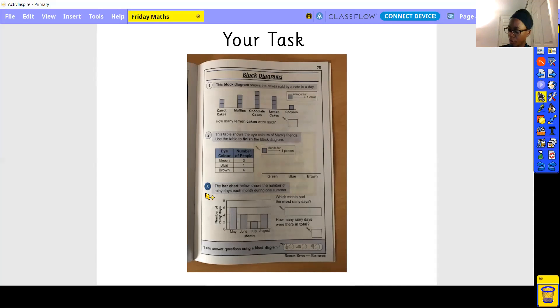And finally, question three. The bar chart below shows the number of rainy days each month during one summer. Which month had the most rainy days? Top of your box. How many rainy days were there in total? Okay, so there are your tasks.